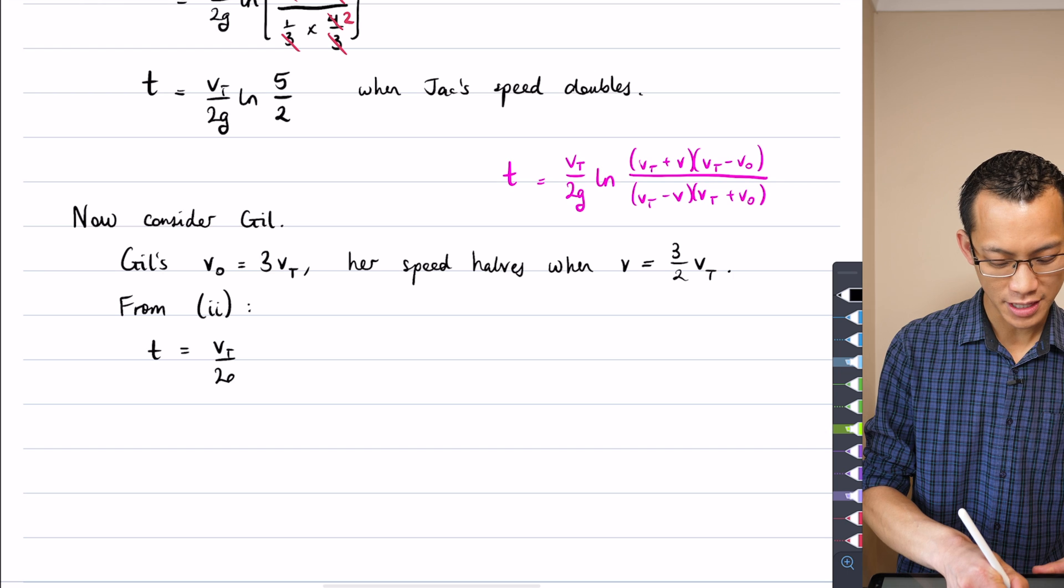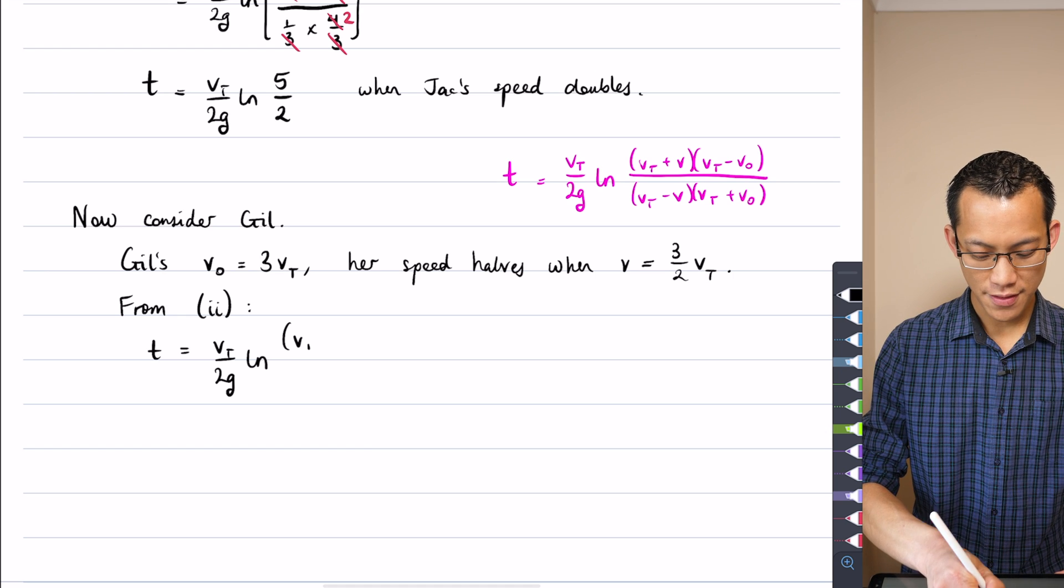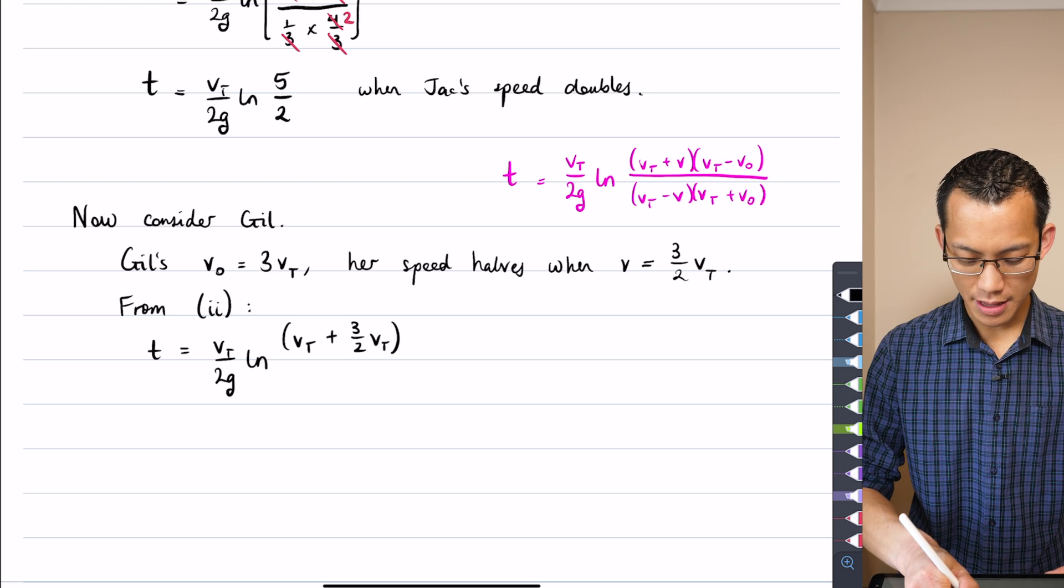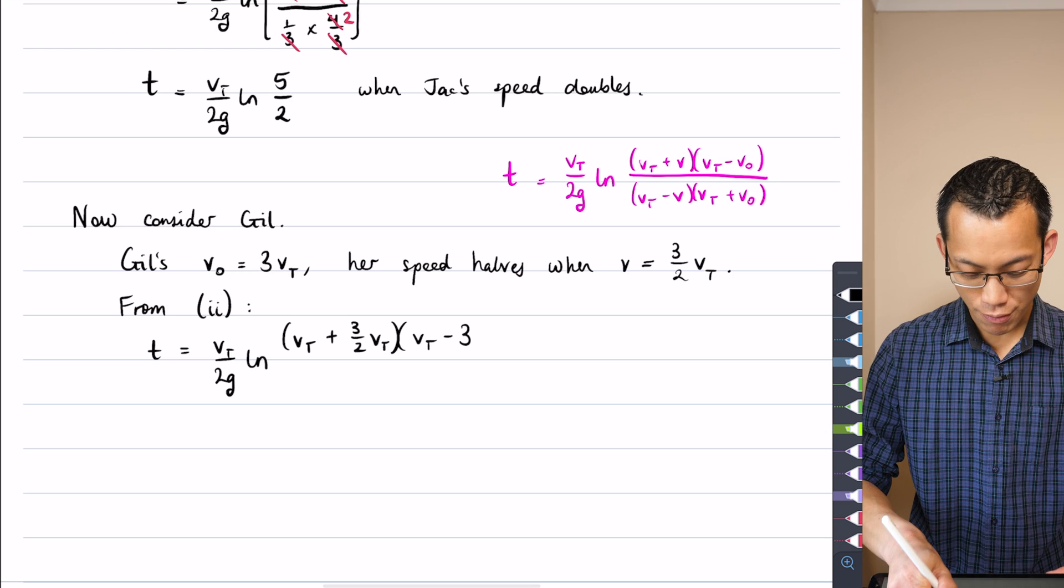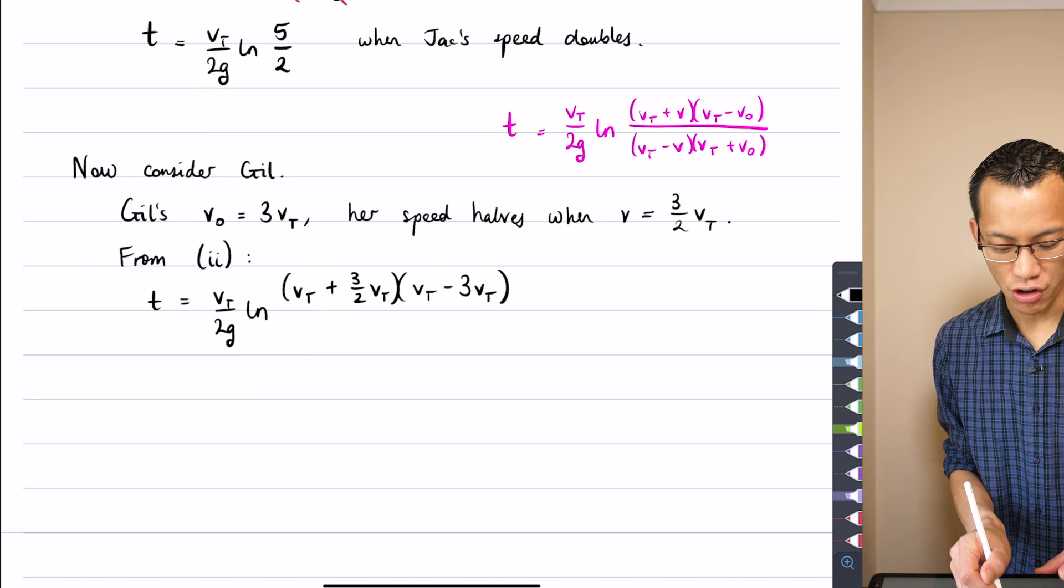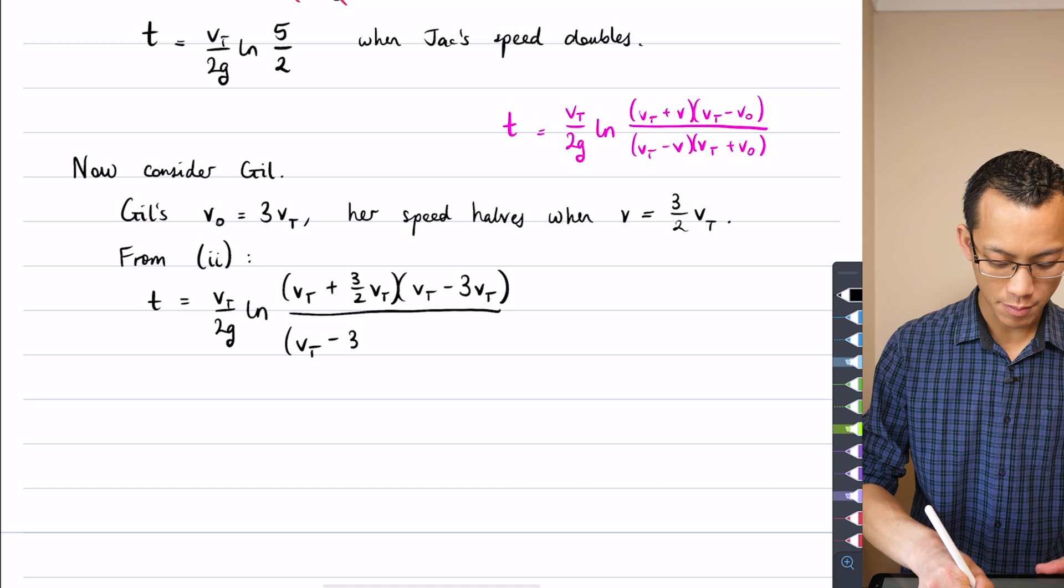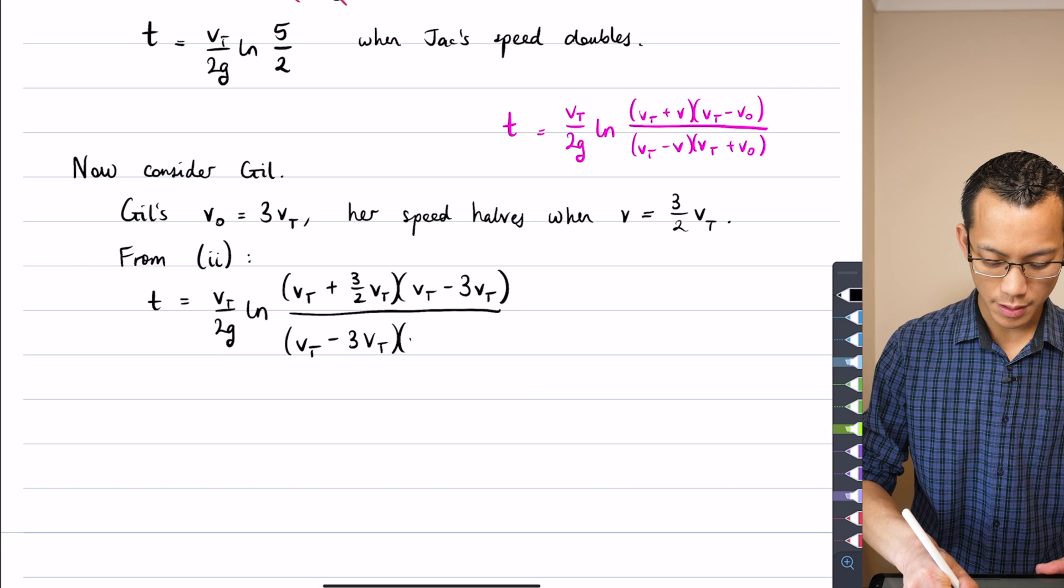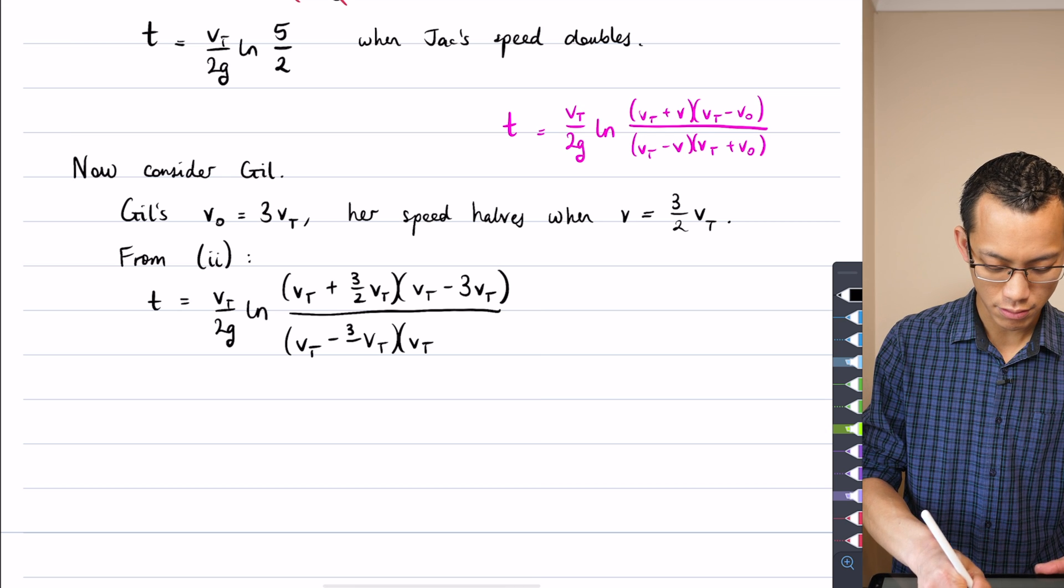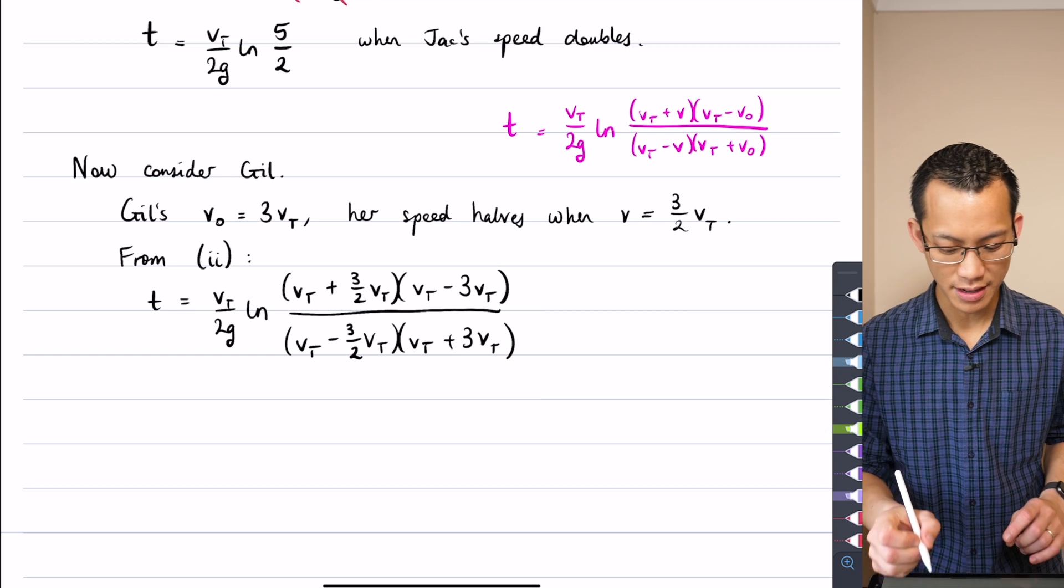So T is going to be equal to, I've written this like 15 times at this point, so I know there's a VT over 2g out the front, log of. Let's do the substitution. VT plus, this is 3 over 2 VT, there's my current speed, and then I've got VT minus 3 VT on the numerator, because that's Jill's initial speed once she opens the chute, that's all divided by VT minus that same 3 over 2 VT, and it's going to be VT plus 3 VT here, there was the initial velocity.